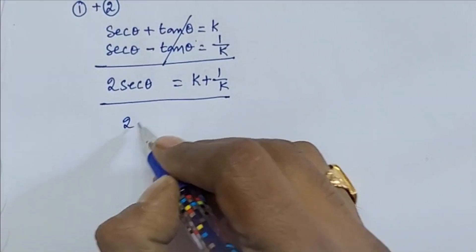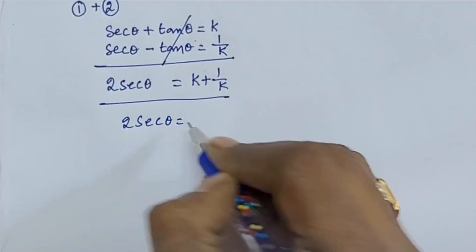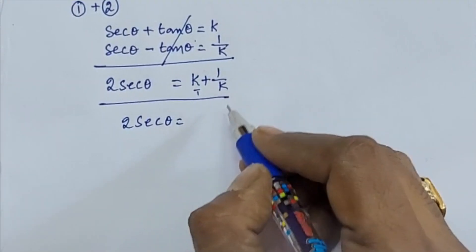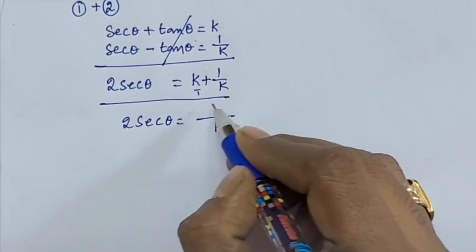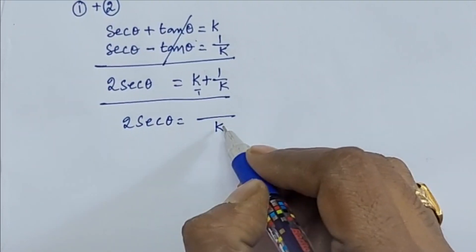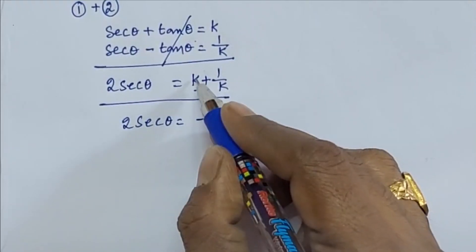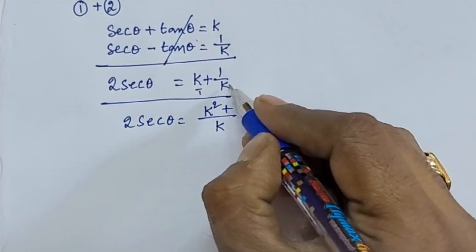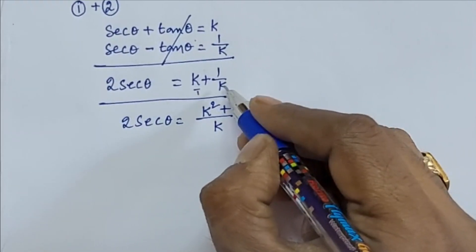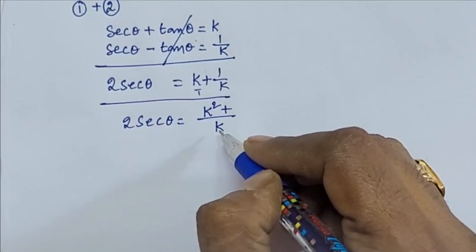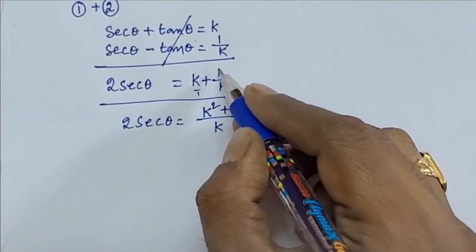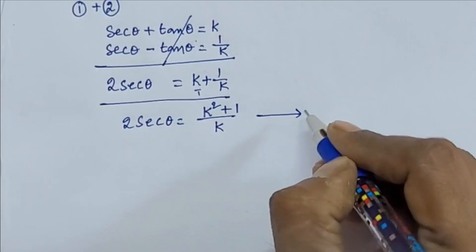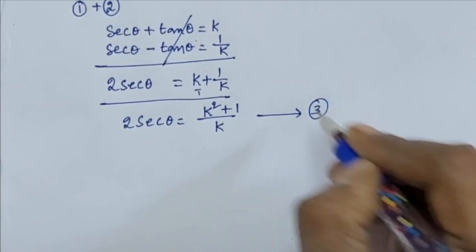So 2 secant theta equals k plus 1 by k. Taking the LCM of 1 and k, which is k: k into k gives k squared, and 1 into 1 gives 1. So 2 secant theta equals k squared plus 1 by k. Take this as equation 3.